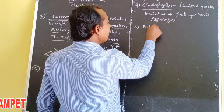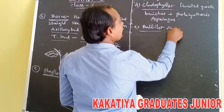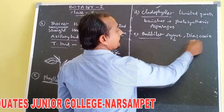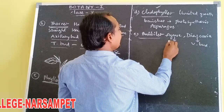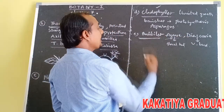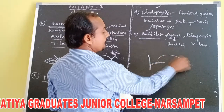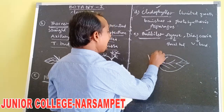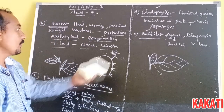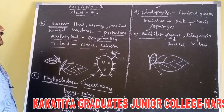Fifth and last is bulbils. In Agave and Dioscorea, the vegetative bud in Dioscorea and floral bud in Agave store food material and become tuberous — these are called bulbils. If these bulbils separate from the parent plant, they produce adventitious roots and develop into a new individual plant. Hence they are involved in vegetative reproduction. Only bulbils involve vegetative reproduction among aerial stem modifications.